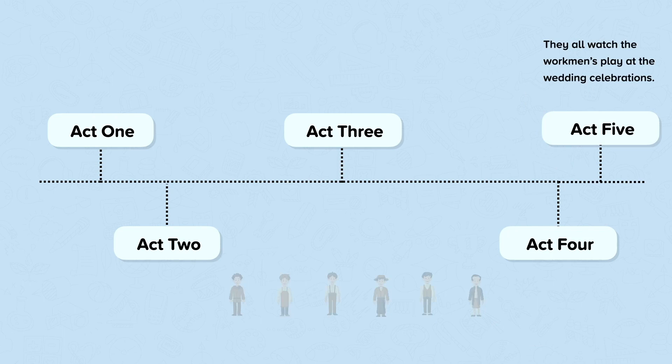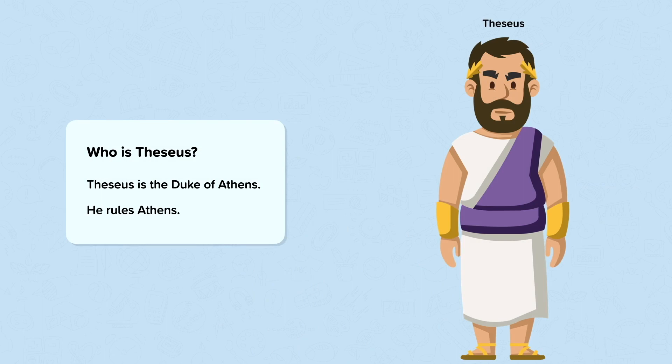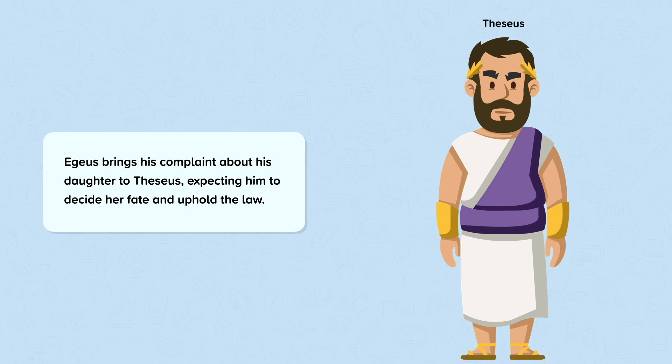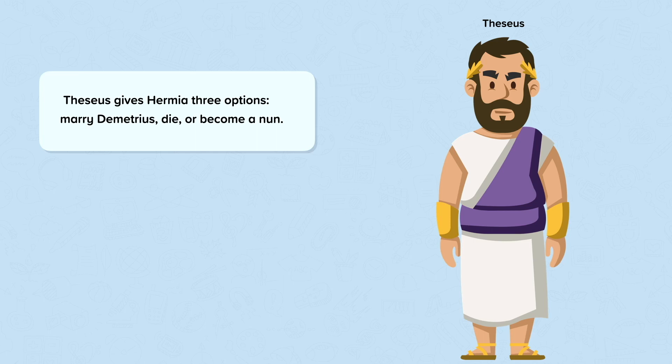Now let's remind ourselves of some of the key facts about Theseus. Theseus is the Duke of Athens, which means he rules Athens. In Act 1, Aegeus brings his complaint about his daughter to Theseus, expecting him to decide her fate and uphold the law. Aegeus is demanding Hermia's death, but Theseus offers Hermia three options: she could marry Demetrius, die by execution, or become a nun.